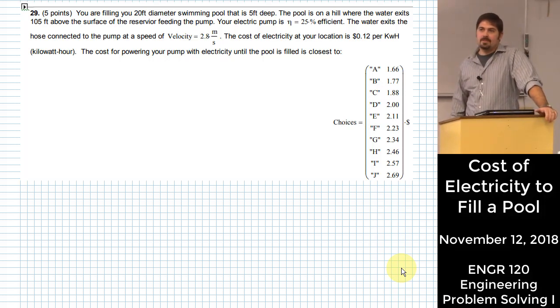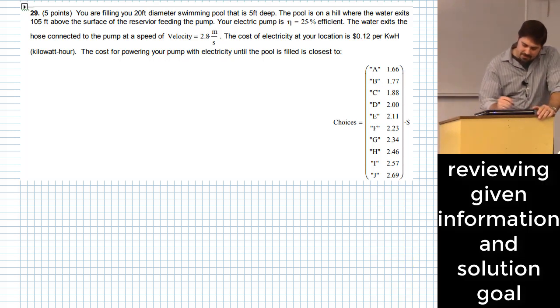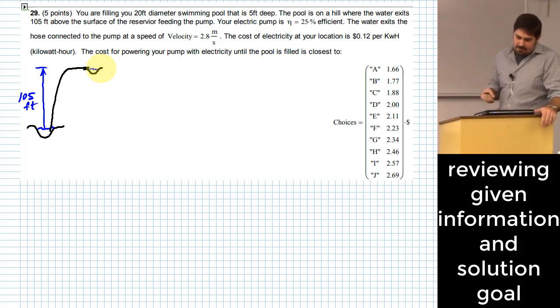So let's say you're going to fill up a pool and this pool has a 20-foot diameter and it's five feet deep. It's up on a hill and the water is going to exit the pipe that is delivering the water. It's going to exit 105 feet above the surface of the reservoir that is feeding the pump. So if we were going to sketch something like that we'd basically say there's some sort of a basin down here where the water exists now. And what we're going to do is we're going to pump that up to another little basin that's up on top of a hill.